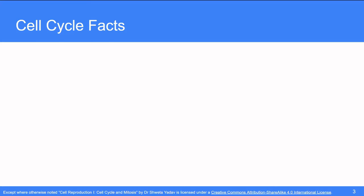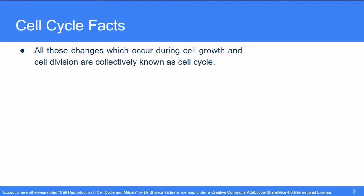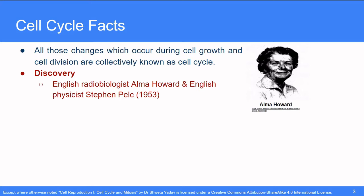Let us begin with some facts about the cell cycle. All those changes which occur during cell growth and cell division are collectively known as cell cycle. The first detailed explanation of the phenomena of cell cycle was given by English radiobiologist Alma Howard and English physicist Stephen Pelk in 1953. The duration of a cell cycle can vary from 15 minutes in a bacterial cell to several weeks in some embryonic cells while the cell remains in interphase for about 90 to 96% of the total duration of the cell cycle which is the maximum for any phase.